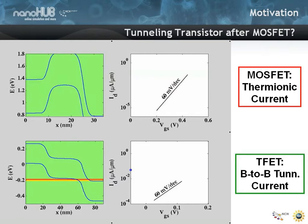In a tunneling transistor, you might gain a benefit versus a MOSFET transistor such that your turn on and turn off might happen faster than in a MOSFET.